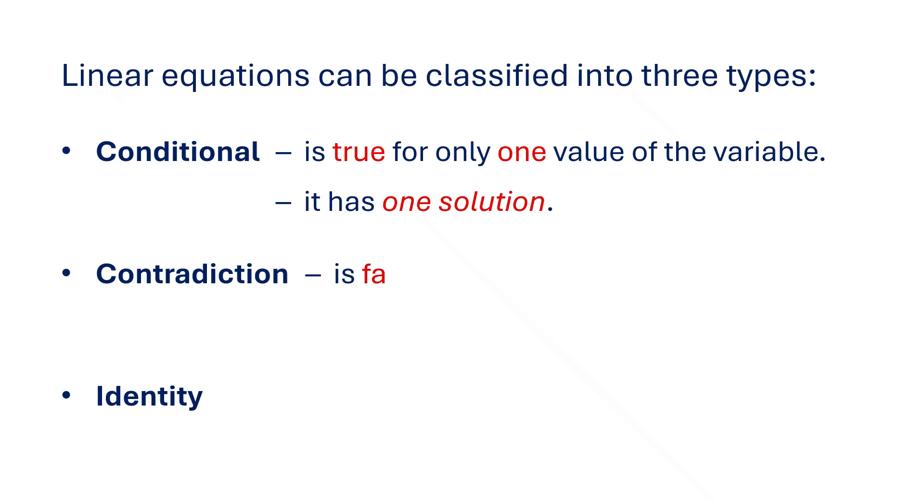A contradiction equation is false for all values of the variable. It doesn't work for any number you try. That means it has no solution.